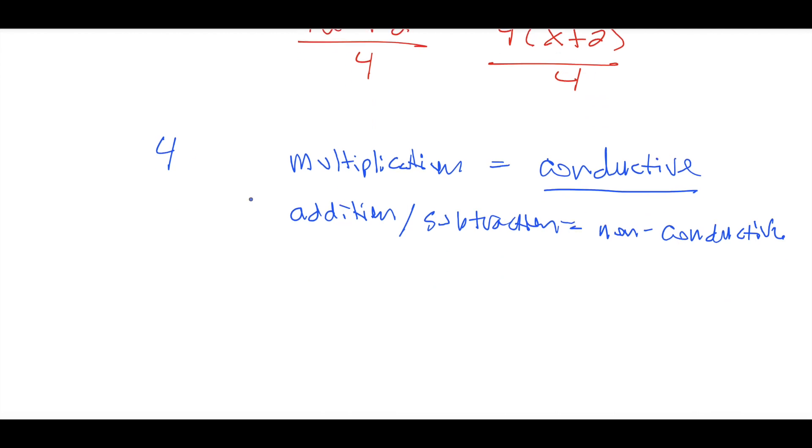So if you have w times r over w, can electricity travel through both of these guys? Yes, it can, because what's the operation happening right here? Multiplication. And as long as you have conductivity throughout the entire thing, you can cancel like that.